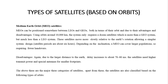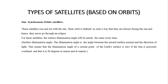Apart from this, satellites are also classified based on the following types of orbits. Sun Synchronous Orbit Satellites: these satellites rise and set with the Sun. The orbit is defined in such a way that they are always facing the Sun and hence they never go through an eclipse. For this satellite, the surface illumination angle will be nearly the same every time. The illumination angle is the angle between the inward surface normal and the direction of light. This means that the illumination angle of a certain point of the Earth's surface is 0 degrees if the Sun is precisely overhead, and it is 90 degrees at sunset and at sunrise.